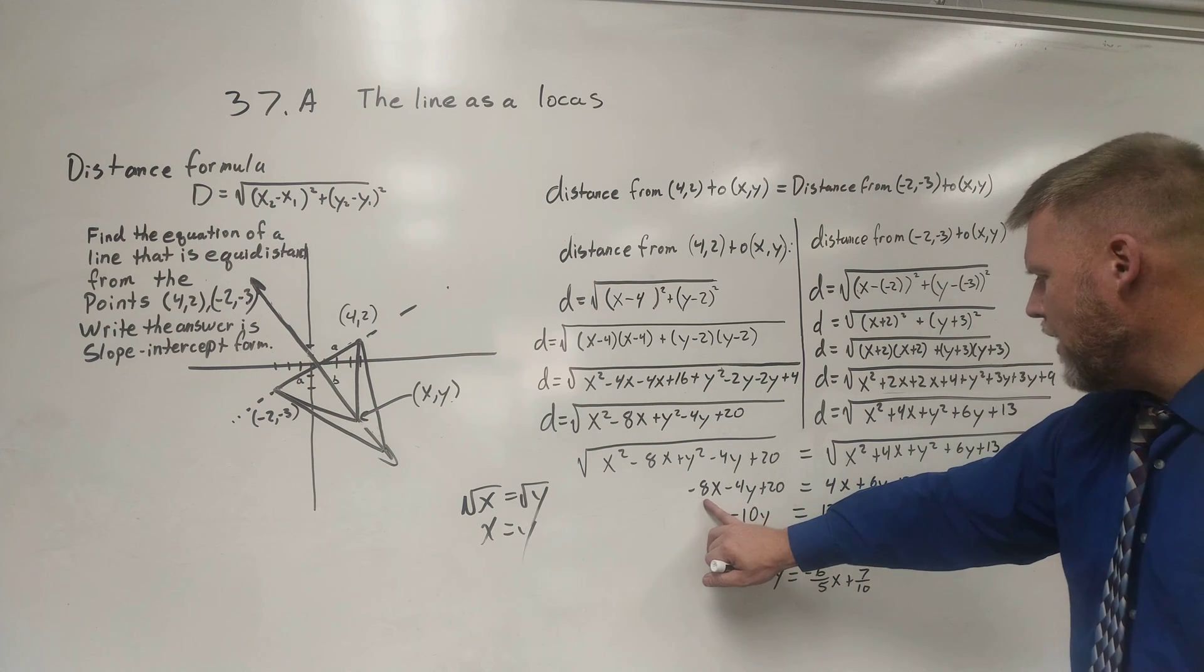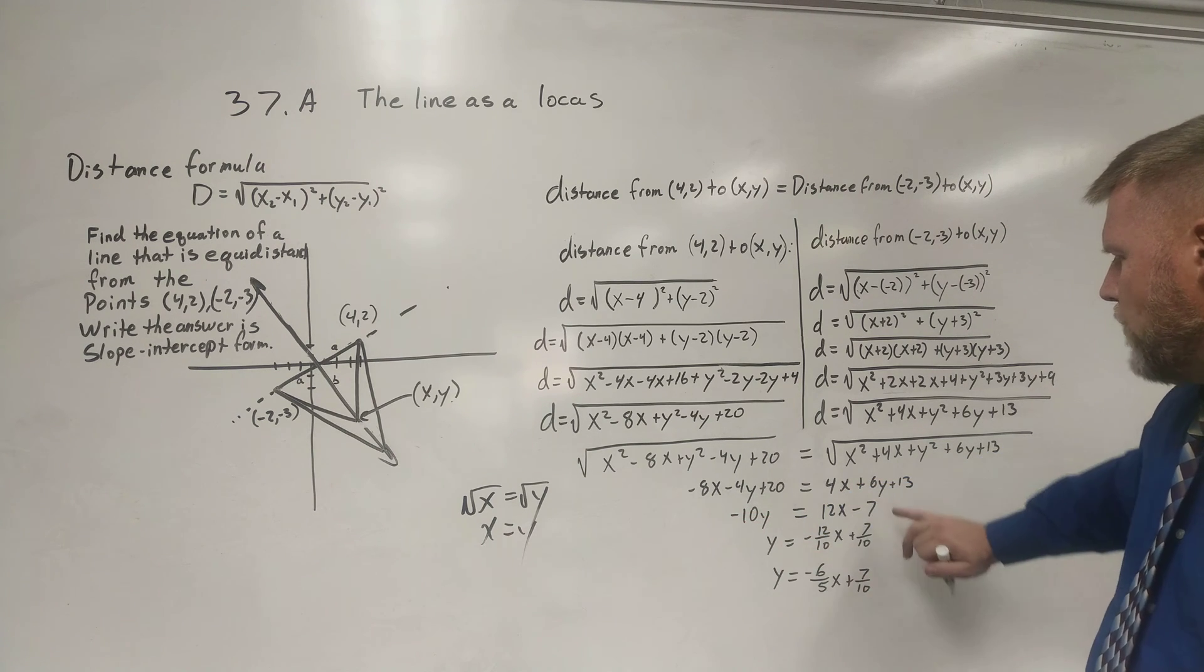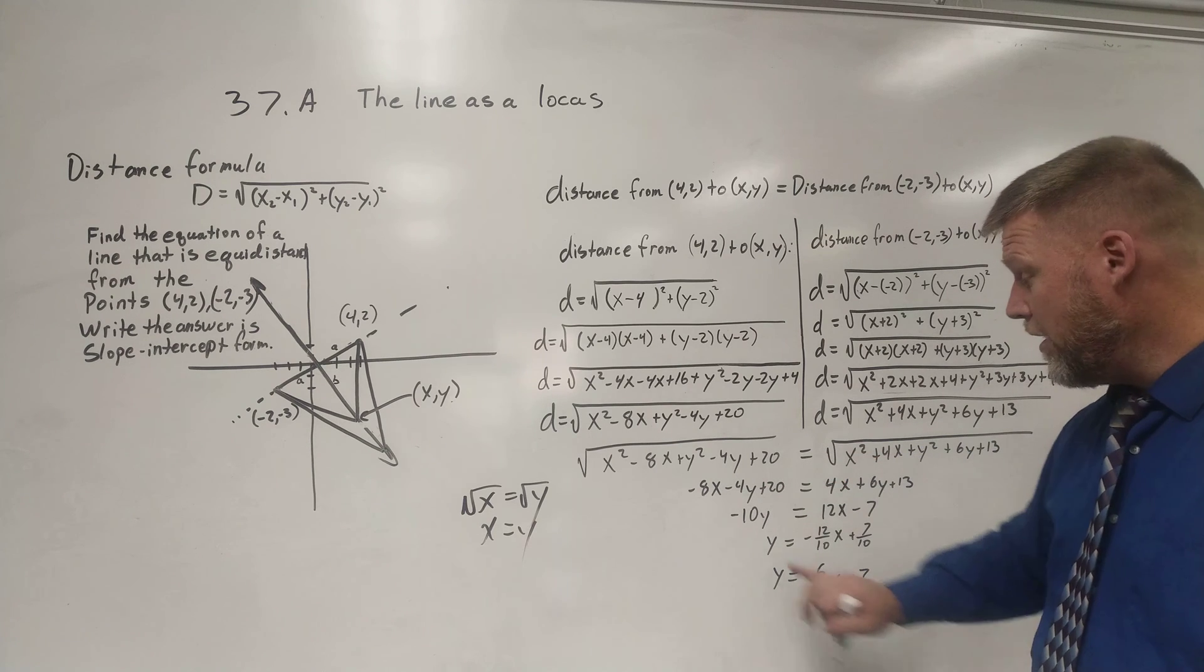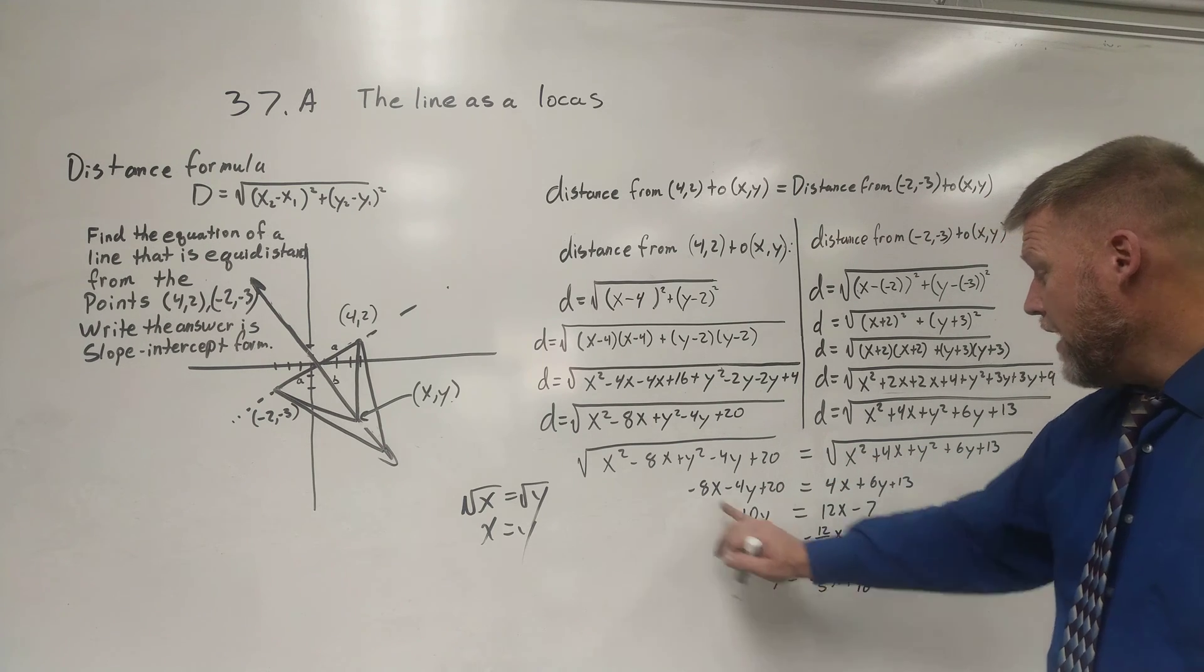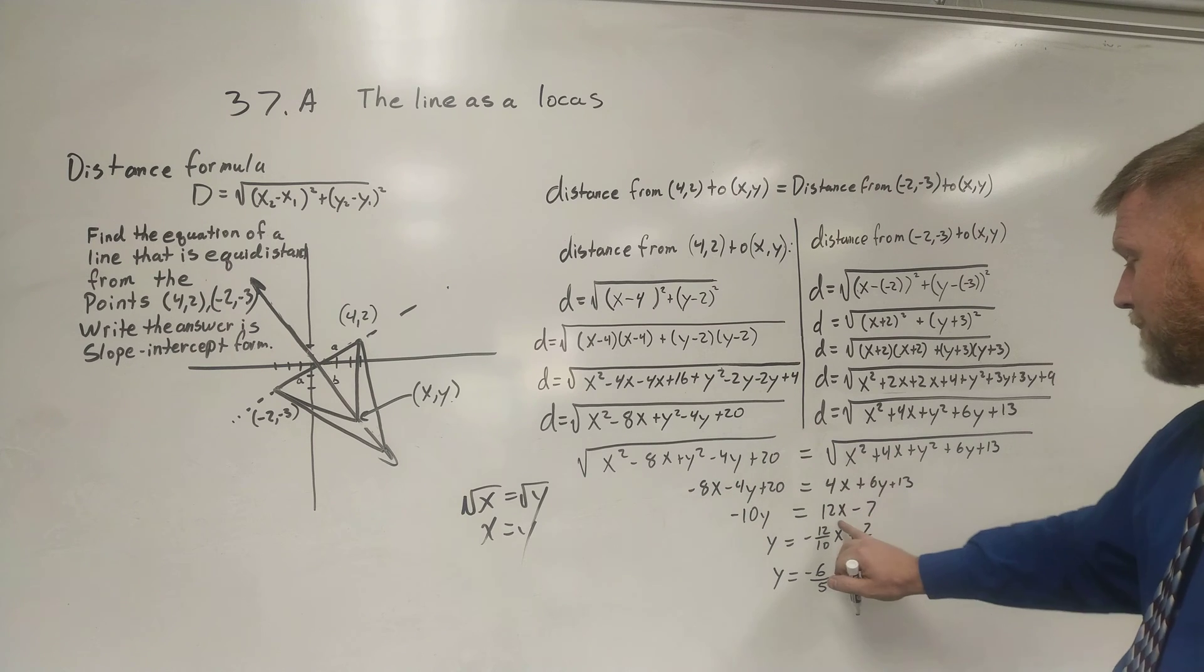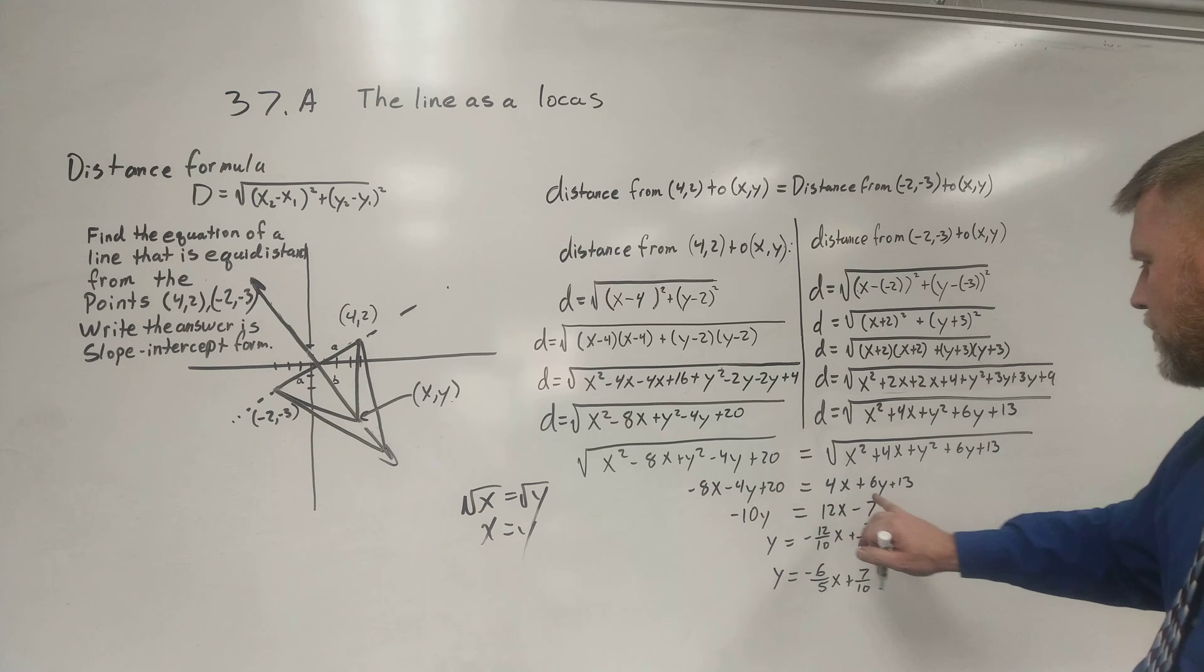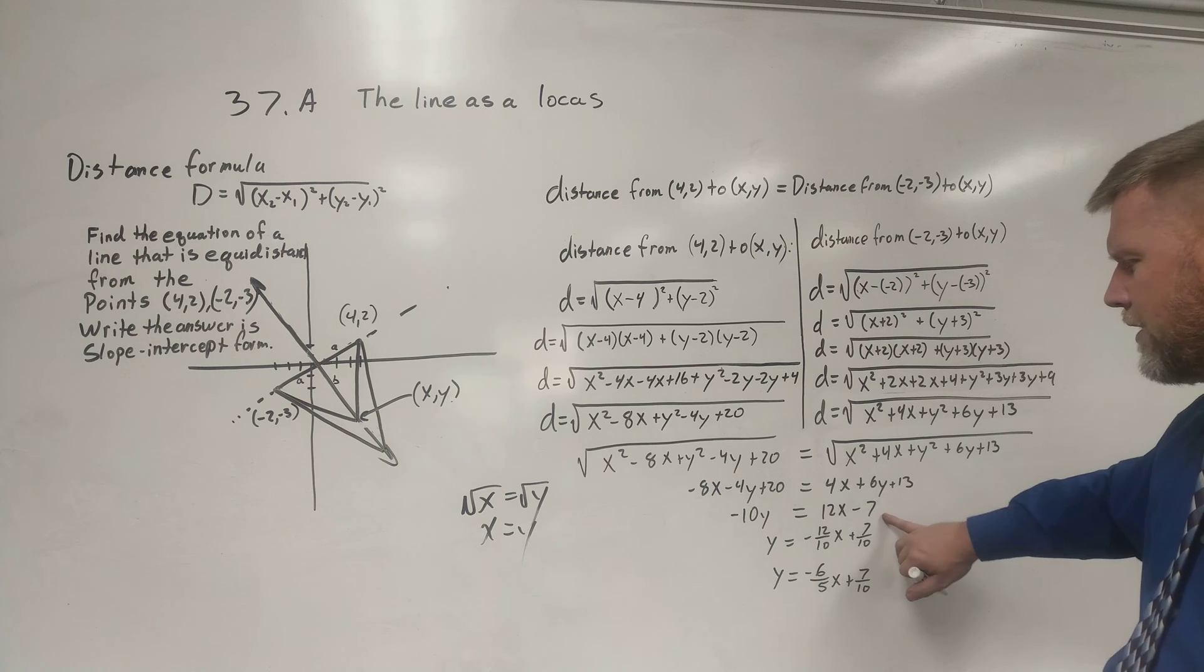And I realize that I start adding my like terms. So when I do so, I move the 6y over to this side, subtracting 6y, making it a negative 10y. I add 8x to this side, making it a 12x. And then I also move the 20 over to here by subtracting 20 from both sides and leaving a negative 7.